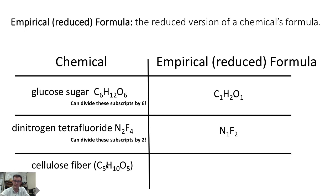In last example, if we had cellulose fiber, we would notice that C5H10O5, each subscript divides by 5. And so the empirical formula would be 1 carbon to every 2 hydrogens to 1 oxygen.